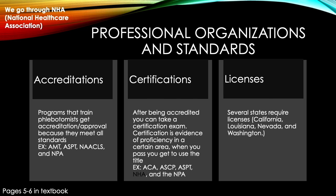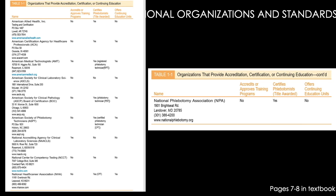The differences between accreditation, certifications, and licenses in phlebotomy: you will be certified by NHA, the National Healthcare Association that we go through. After you finish, graduate successfully, and pass the test, you will be a nationally certified phlebotomist. The accreditation is for NHA — the agency you will be certified through — and they are accredited by NAACLS. When it comes to licenses, there are a few states that require it, making you a licensed phlebotomist — those states include Washington and California.